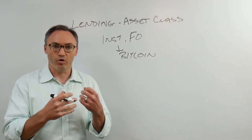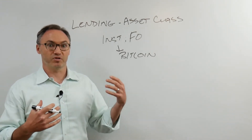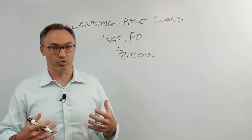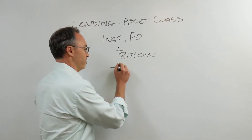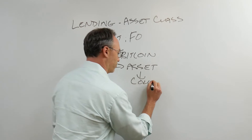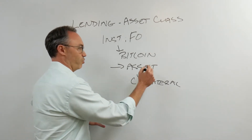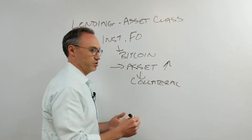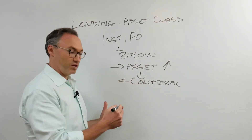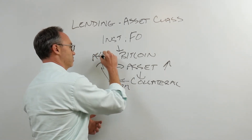One of the hallmarks they look for when investing in an asset class is: can we use it as collateral? Debt makes the world economy work. So when they invest in an asset, they want to take that asset, use it as collateral. If they put five million dollars in, they want to use it as collateral and maybe get a loan for three million and put that into some other asset.